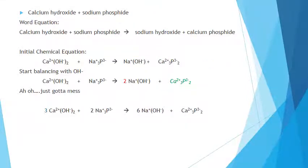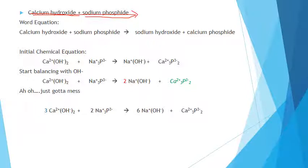Going back to single replacement: those reactions take place because something gets oxidized and reduced — it's always a metal or hydrogen that gains or loses electrons. Double replacement reactions come in two types. The first is precipitation, which we're dealing with here, and the reason these take place is because a solid is formed.